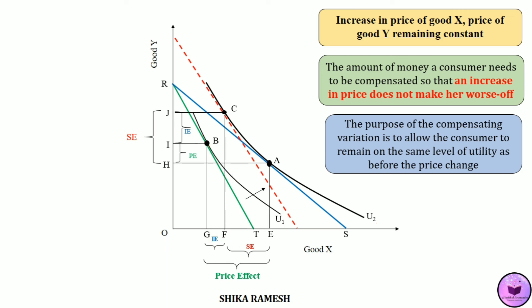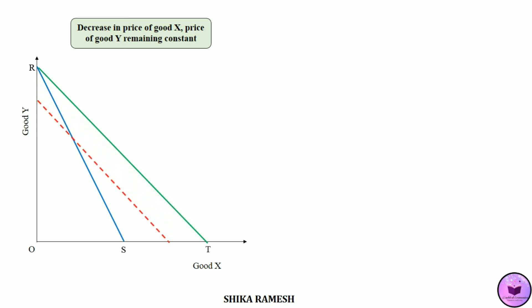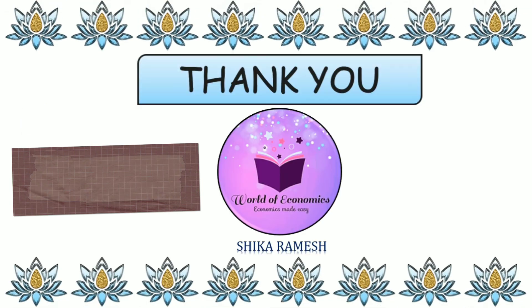In short, the Hicksian method of using compensating variation in income adjusts the change in real income to allow the consumer to remain on the same level of utility as before the price change. This adjustment in purchasing power is represented by the red dotted budget constraint in both diagrams, and that is what divides the price effect into income and substitution effects. Hope you all have understood the Hicksian approach to price decomposition. If you liked the video, do subscribe to my channel and share. Thank you.